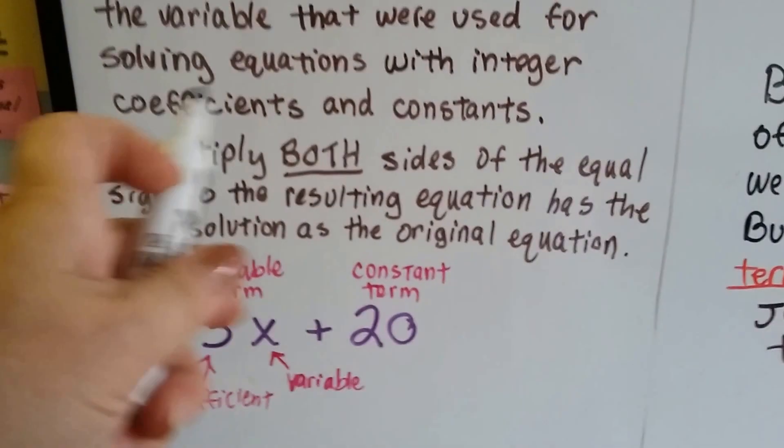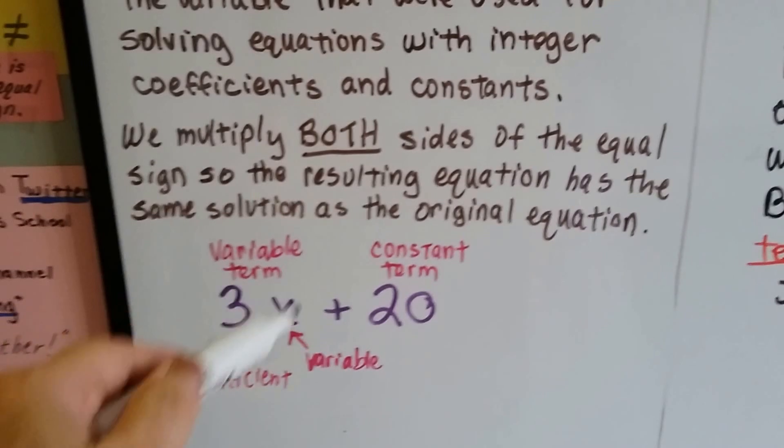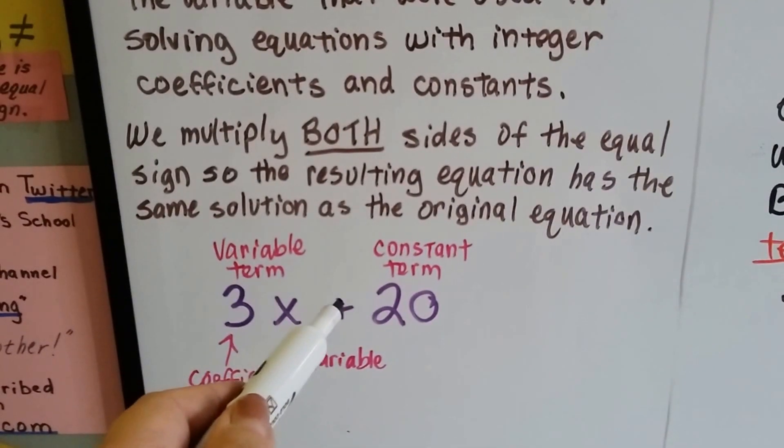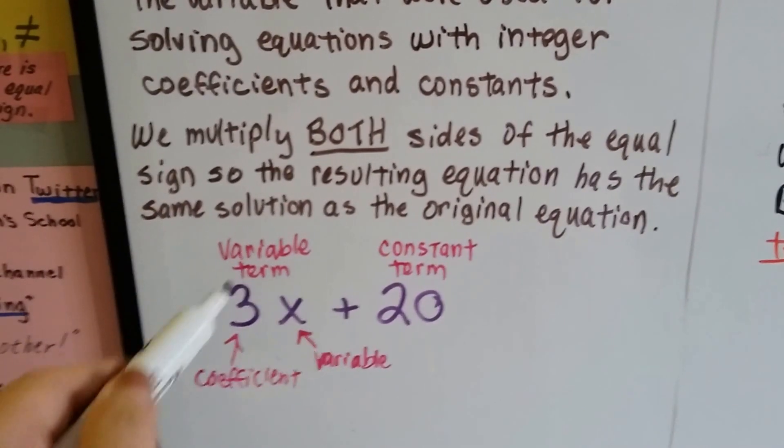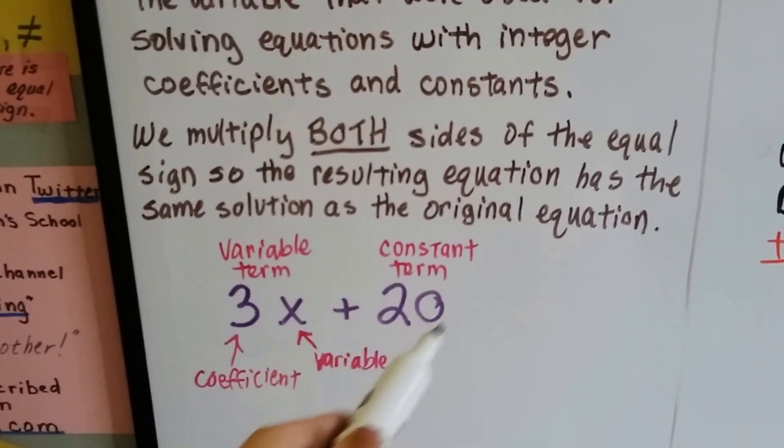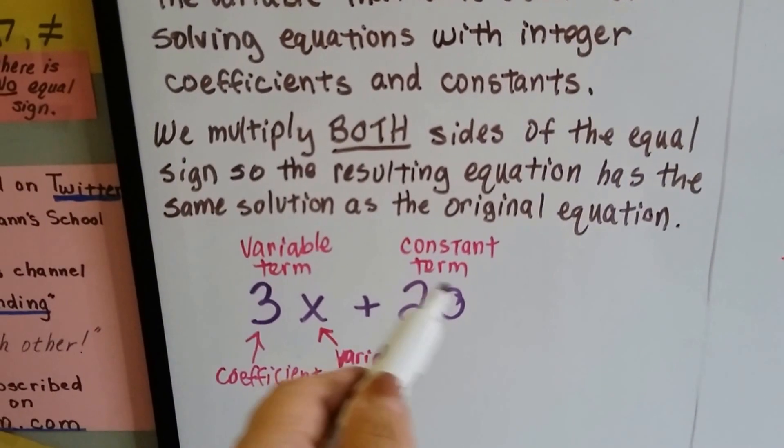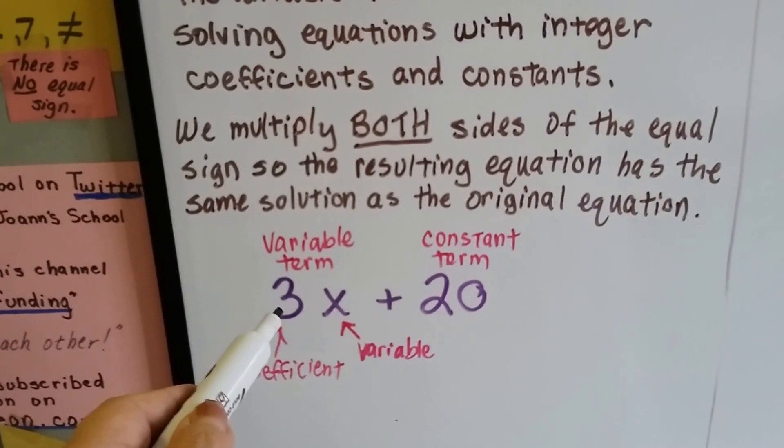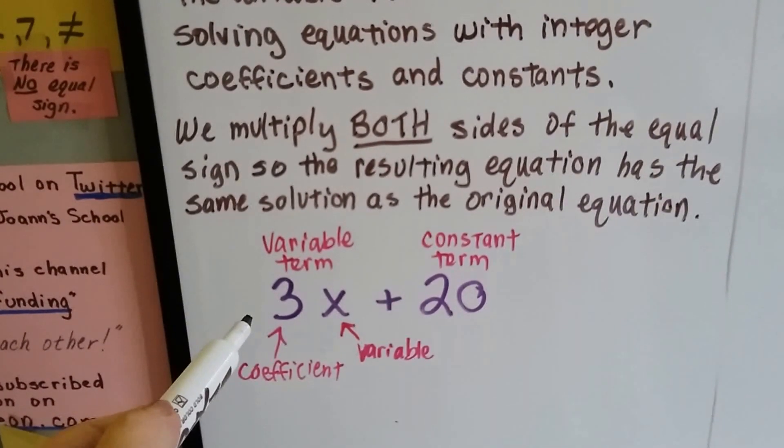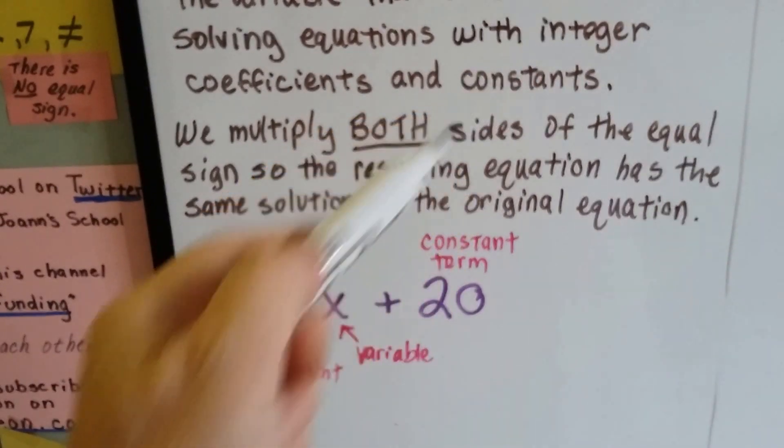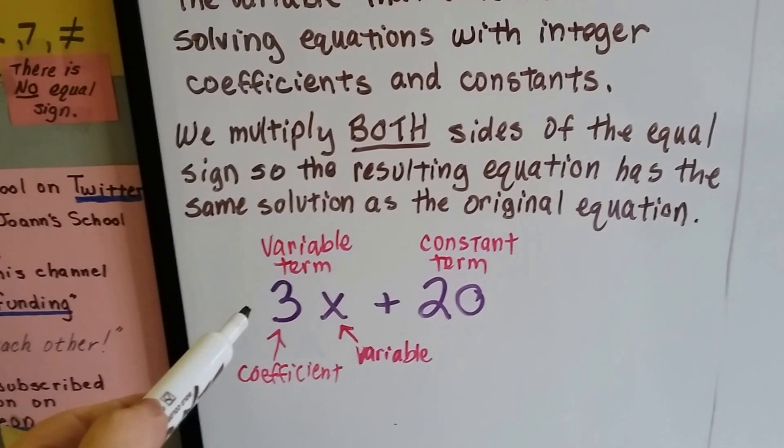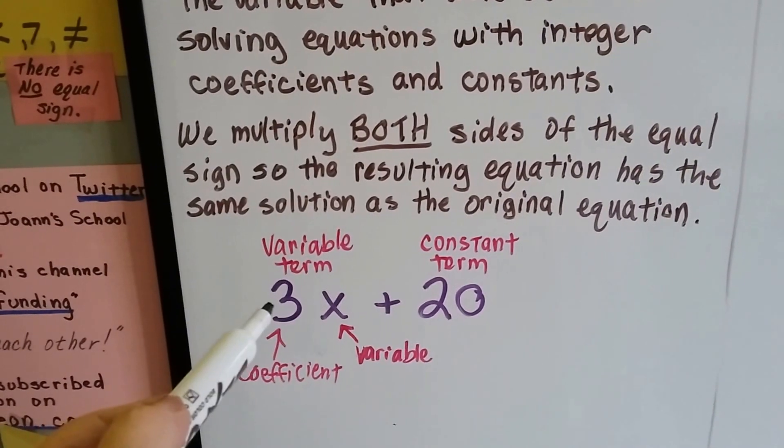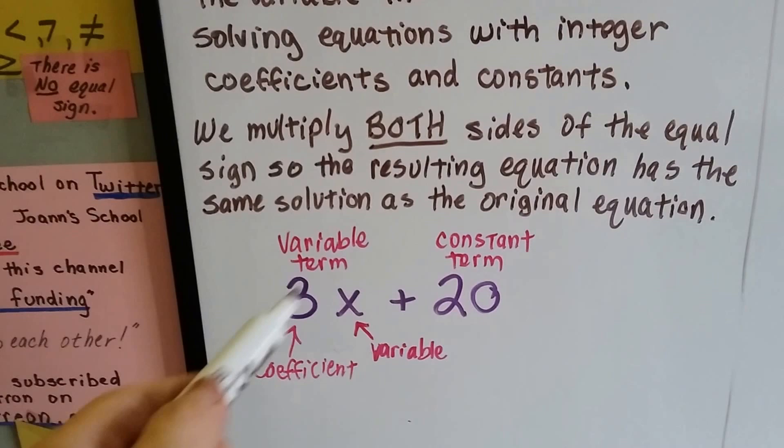If you're confused about these terms, this is a term and this is a term. They're separated by a plus or a minus sign, an operation sign. This is a variable term because it has a variable in it. It's a constant term because it's just the number. So this is a coefficient in front of the variable. It could be a fraction or it could be a whole number. It could be negative or positive.